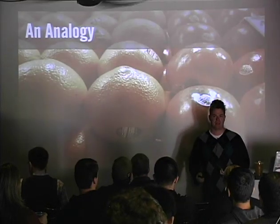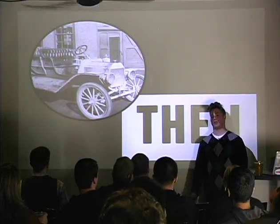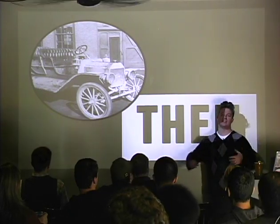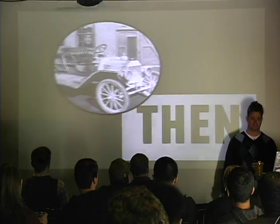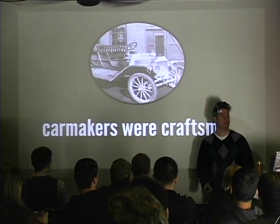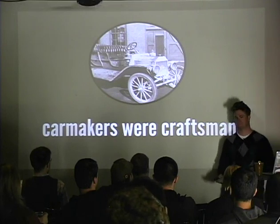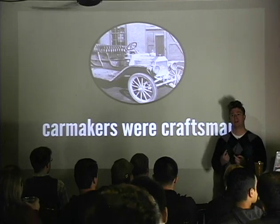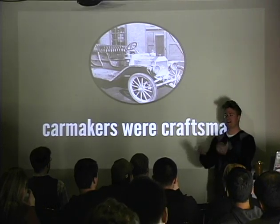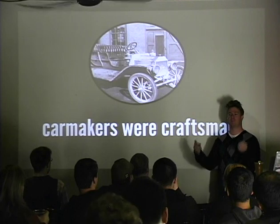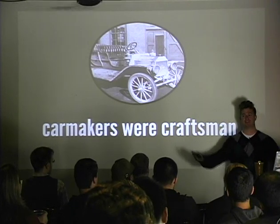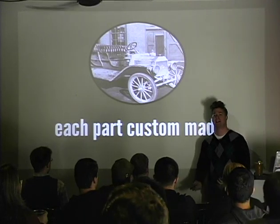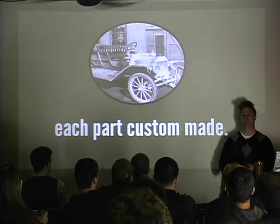Let's talk about whenever cars first started getting produced in the United States. Back in the early 1900s, Henry Ford, Mercedes, all these guys started producing cars. The challenge was that car makers were craftsmen. Every single aspect of the car was built by one person - they didn't even have the concept of production lines. Two cars built by the same company would actually be different, because each part was custom-made.